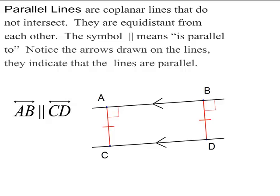Parallel lines are coplanar lines that don't intersect. They're also equidistant, as long as we're talking about plane geometry. I indicated here that AB is parallel to CD — that's what this parallel symbol means. And these arrowheads indicate that AB is parallel to CD. In red, I showed that they're equidistant.